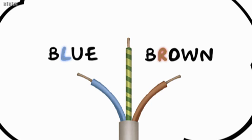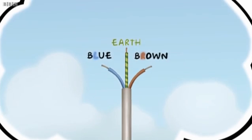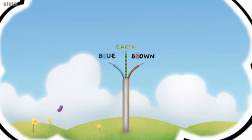If there's a yellowy-green one, that's called the Earth. Same as the Earth, beneath your feet. Which means the Earth has to go straight down.